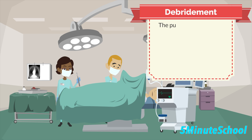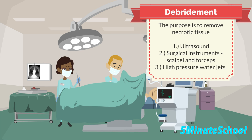Another treatment for pressure ulcers involves managing damaged tissue through a process called debridement, which is sometimes necessary to remove dead or necrotic tissue to help healing. Large amounts of dead tissue can be removed using ultrasound, surgical instruments like a scalpel and forceps, or high-pressure water jets. Local anaesthetic is usually used to numb the area so the debridement is pain free.